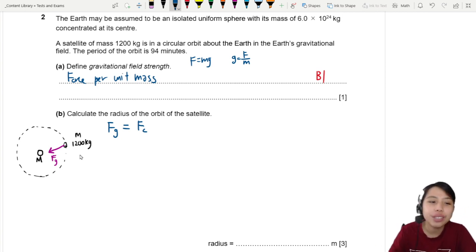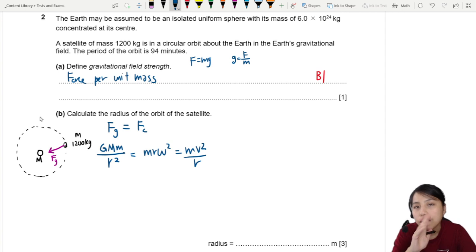Step 2: You sub in the equations that you know. FG is going to be Newton's law of gravitation: GMM over R squared. FC has two possible options: either MR omega squared or MV squared over R. You look at what information they give you. If it's time-based, 94 minutes, you're probably going to use the one with omega, not the one with velocity.